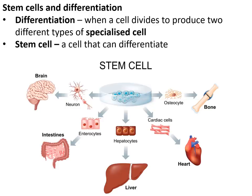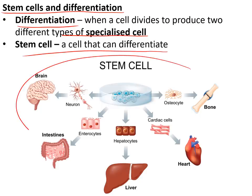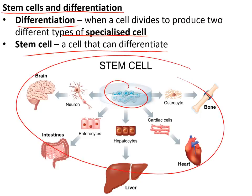Stem cells are a type of cell that can do differentiation. Differentiation is when a cell divides to make two different types of specialised cell. A stem cell can differentiate into many different kinds of cell, as shown here with the stem cells in the middle making all these different other kinds of cell around the outside.